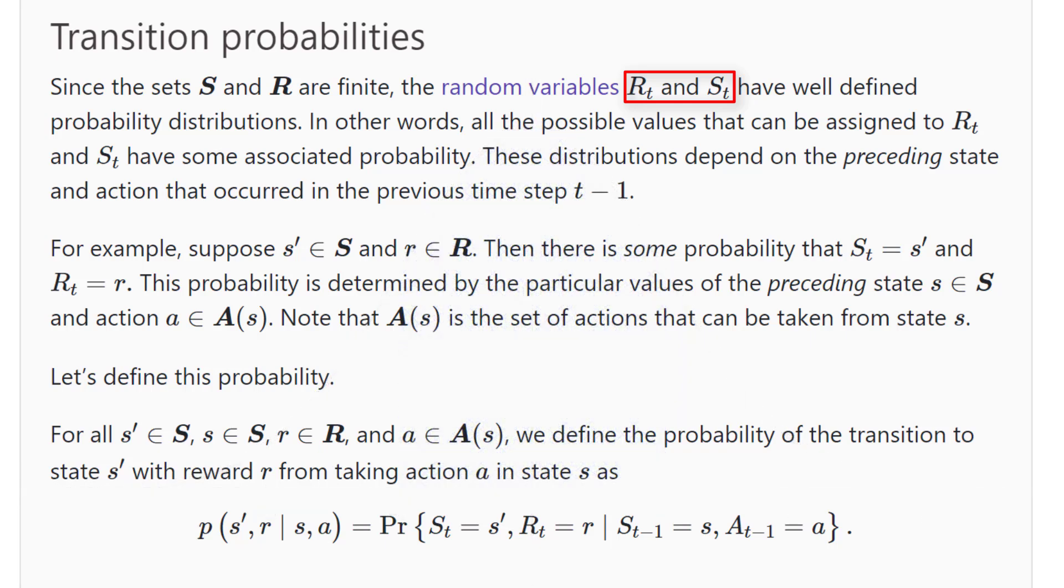These distributions depend on the preceding state and action that occurred in the previous time step, t minus 1. So, for example, suppose s' is a state within the set of all states and r is a reward within the set of all rewards. Then there is some probability that the state at time t will be s' and that the reward at time t will be r. This probability is determined by the particular values of the preceding state and preceding action.